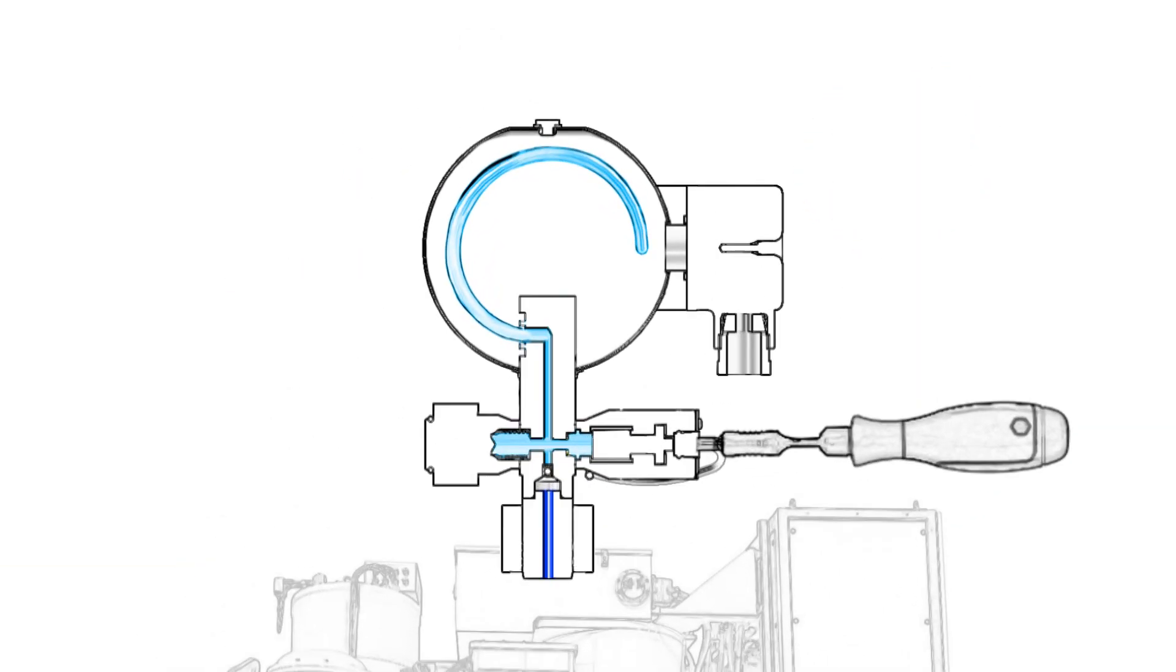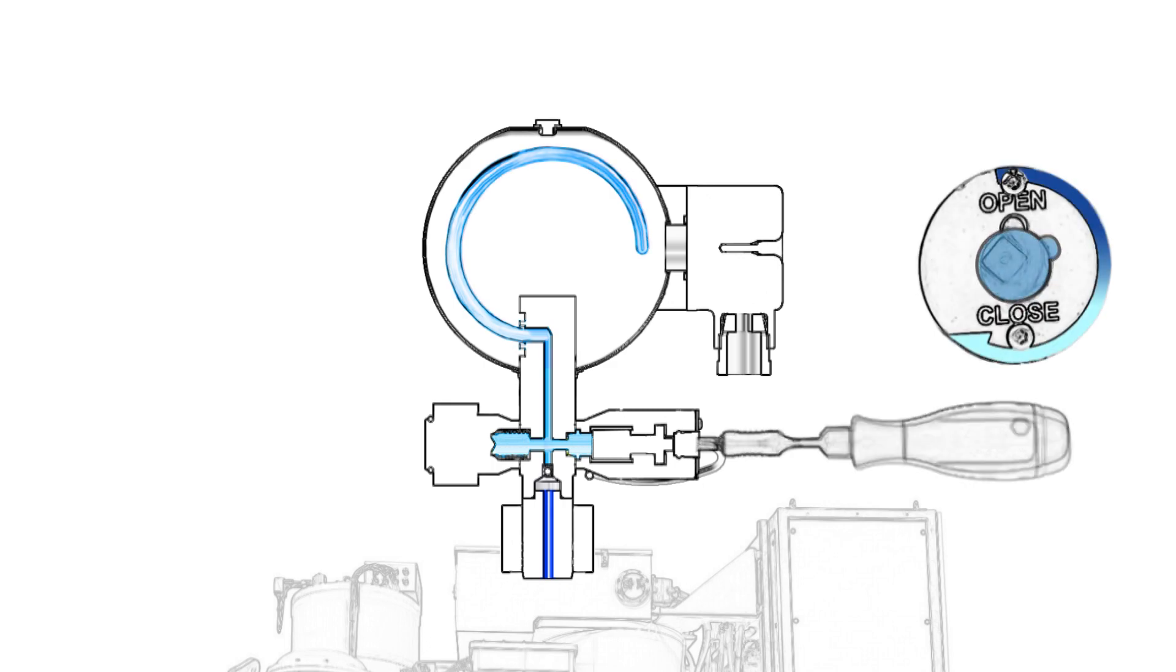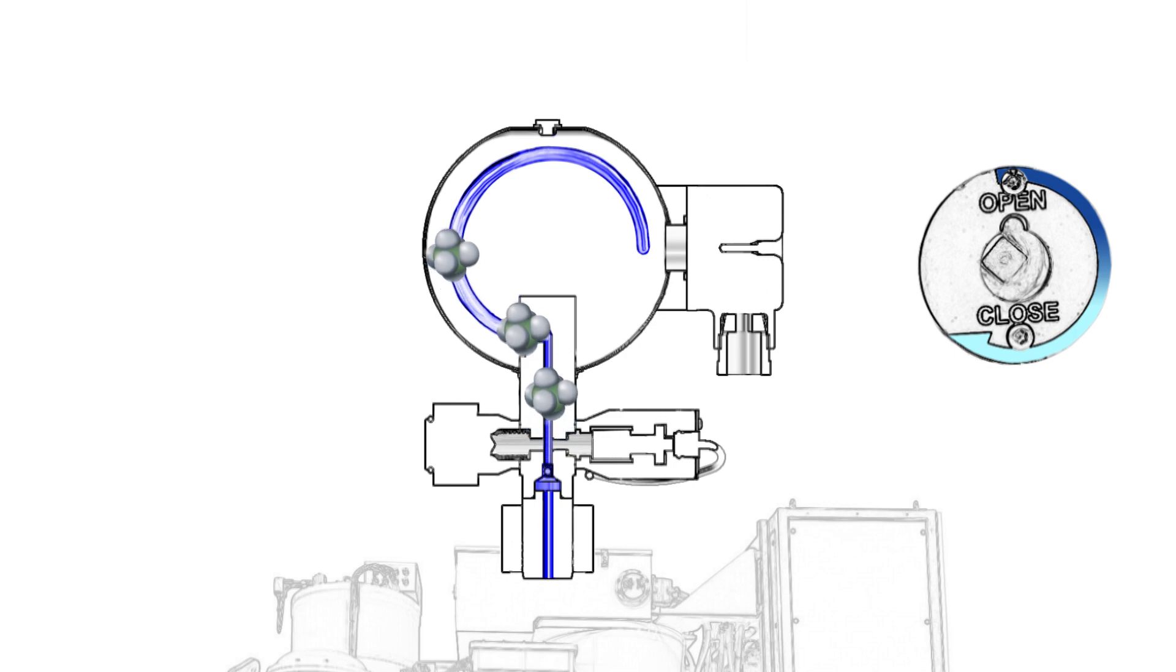By removing the safety key after successful recalibration, the connection to the process is re-established and the gas density monitor will indicate the prevailing system density again.